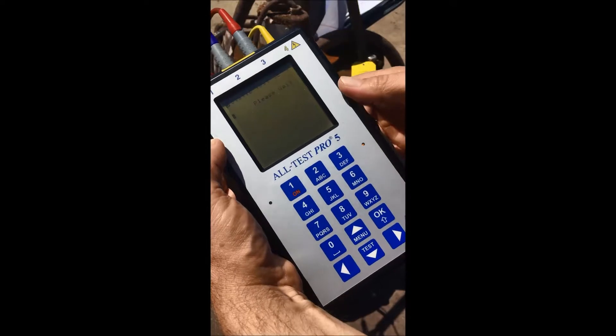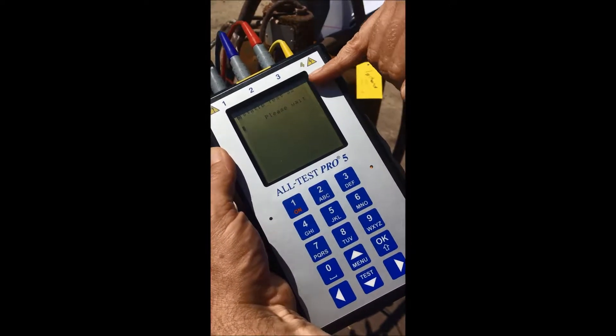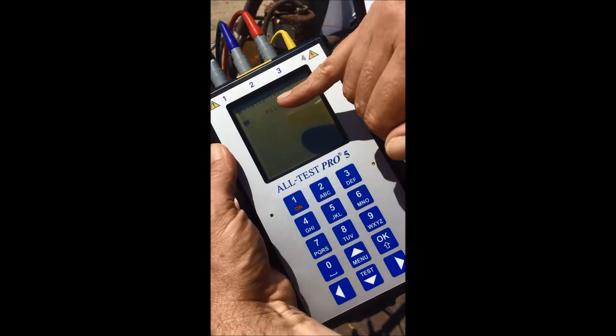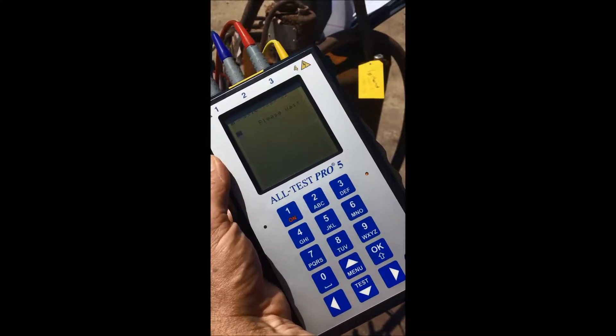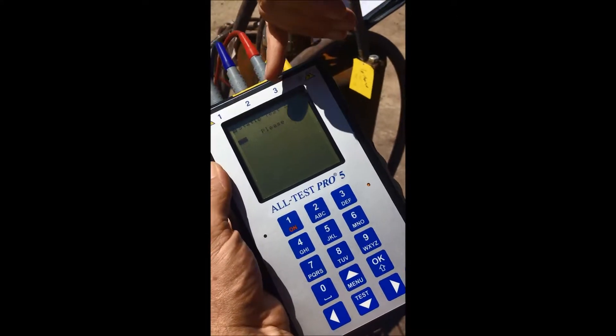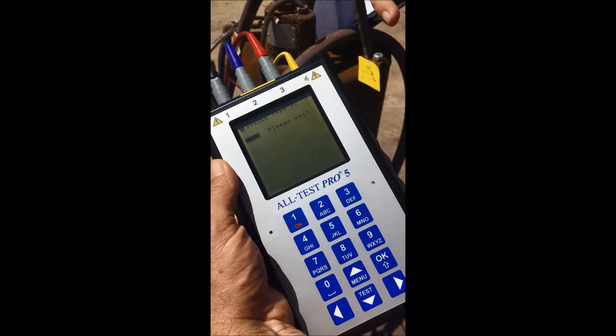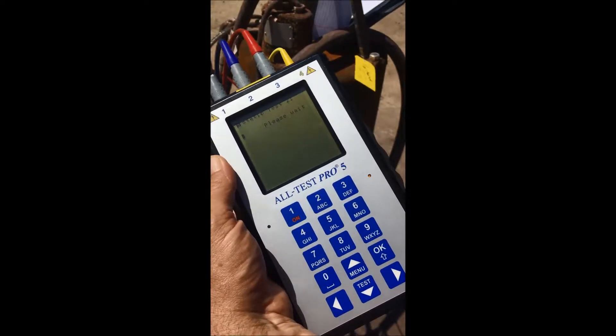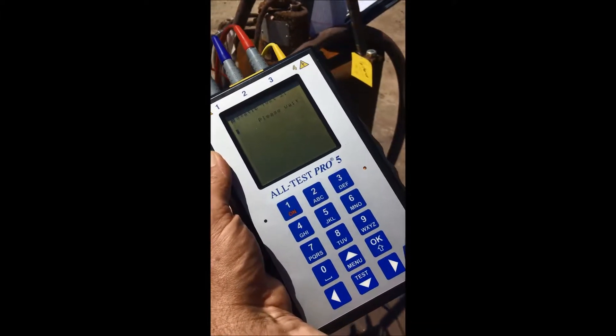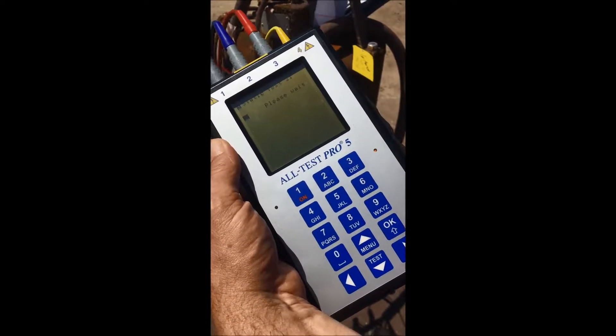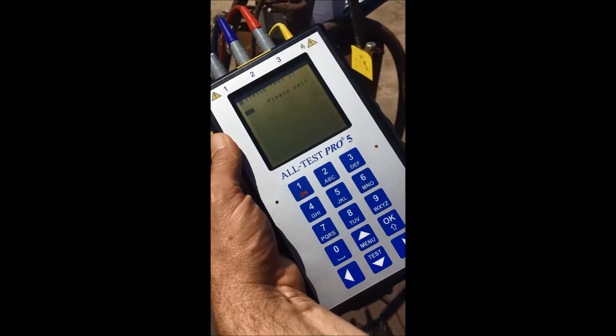So what we're doing now, it is performing a static test. We are comparing phases three to two. You'll see a status bar moving across the screen. Our signal is going through the motor. We're going to compare three to two, two to one, and one to three. What we need to find out is there any difference between the three phases. That's what this electric motor test is all about. We want to see if there's a difference between the three phases.